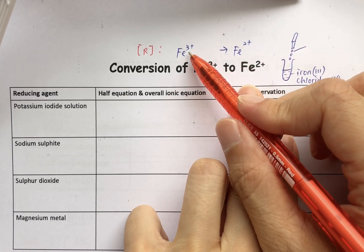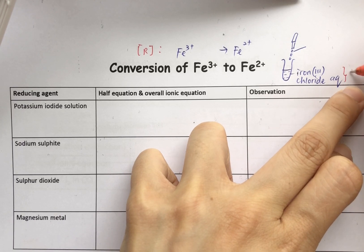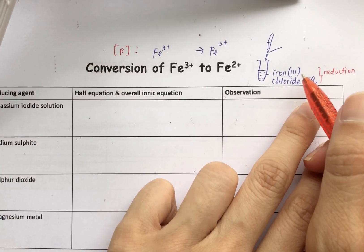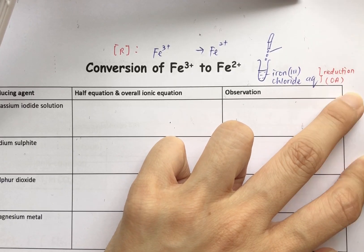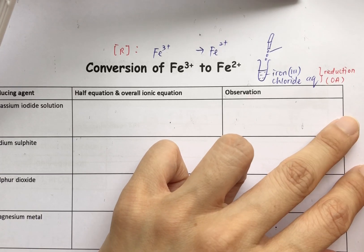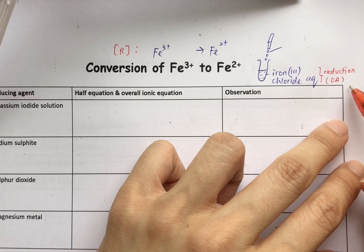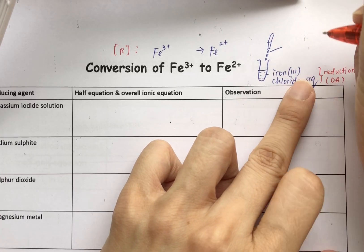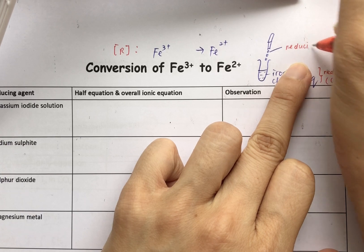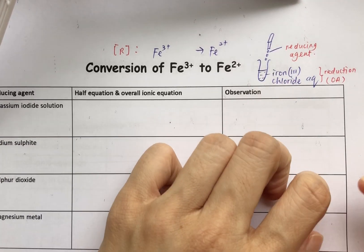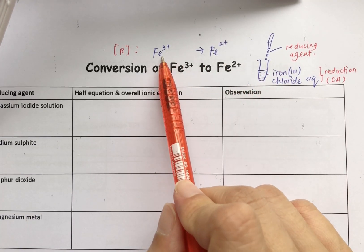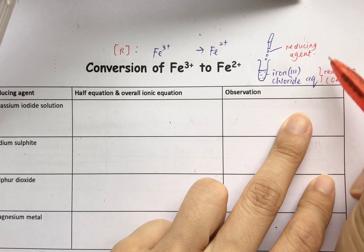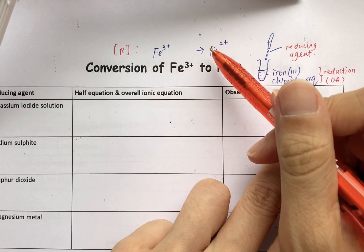Since iron 3 undergoes a reduction reaction, we can say that iron 3 chloride itself is an oxidizing agent — we covered this at the beginning of chapter 3. If something undergoes reduction, then it itself is an oxidizing agent. So if you're asked what is to be added to iron 3 chloride, obviously you will have to add a reducing agent. A reducing agent will be needed to convert iron 3 to iron 2.